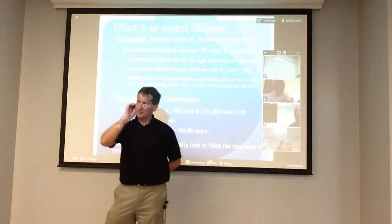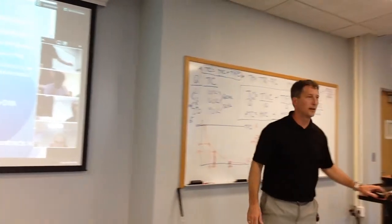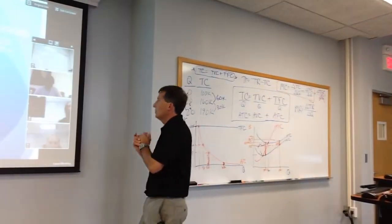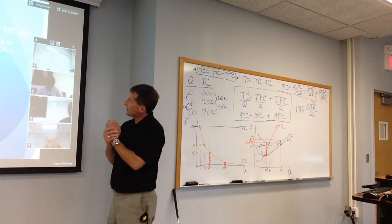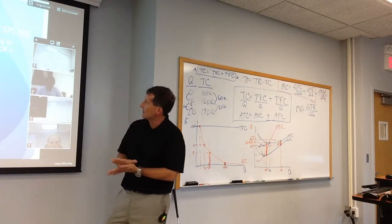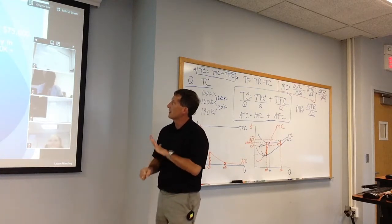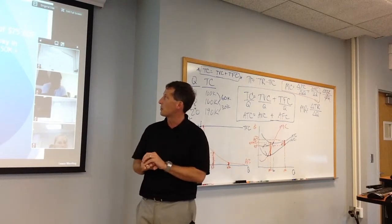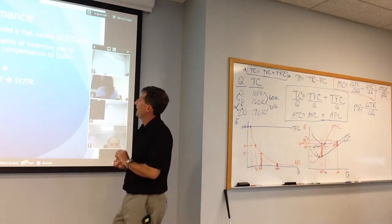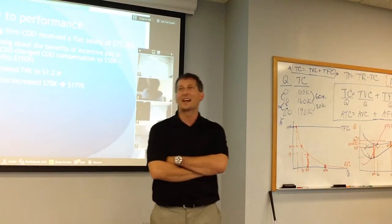Companies knowing that can come up with different plans. Before, there was a flat salary of $75,000. After learning about incentive pay in their MBA class, the CEO changed it to $50,000 plus a third of profits. Profits went up to $1.2 million, and compensation increased from $75,000 a year to $177,000 a year — one happy employee.